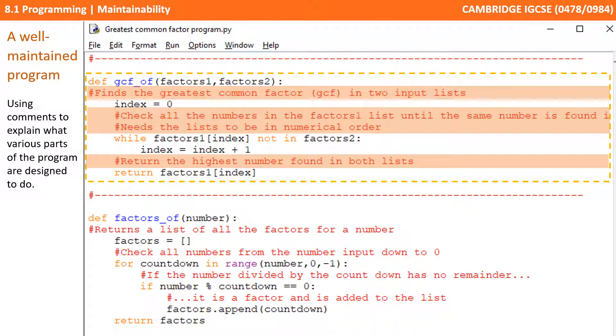We're also using comments here to explain what various parts of the program are designed to do. Now, we may have gone a little bit overboard in this example. We're certainly not suggesting you provide comments for every line of code. That can defeat the object to make the program harder to actually follow.